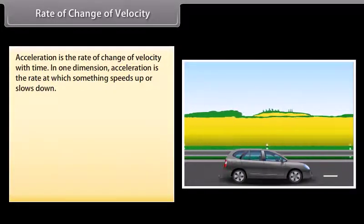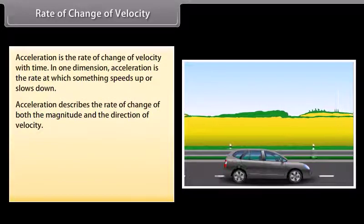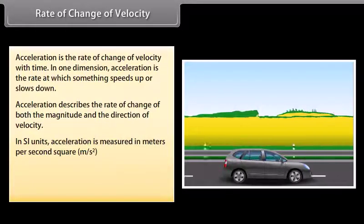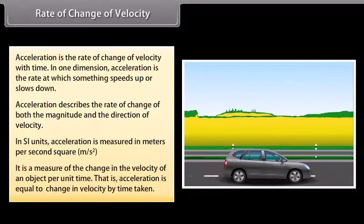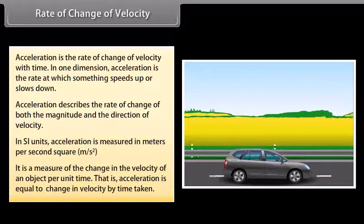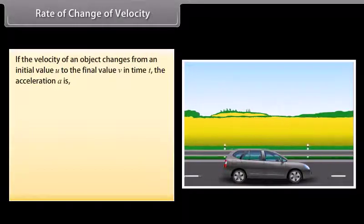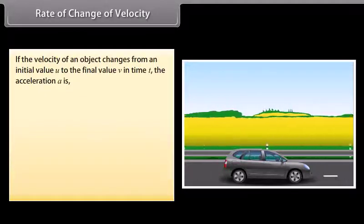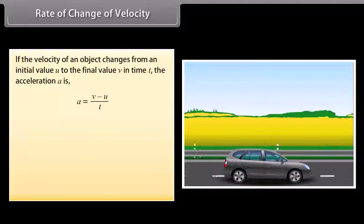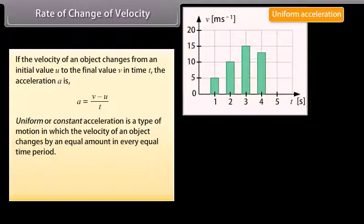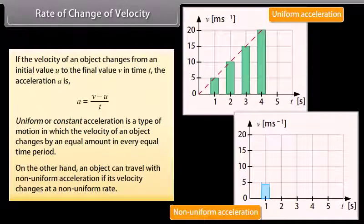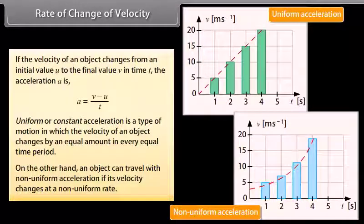Rate of change of velocity — Acceleration. Acceleration is the rate of change of velocity with time. In one dimension, acceleration is the rate at which something speeds up or slows down. Acceleration describes the rate of change of both the magnitude and the direction of velocity. In SI units, acceleration is measured in meters per second squared. Acceleration = change in velocity / time taken. If the velocity of an object changes from initial value U to final value V in time T, then acceleration A = (V − U) / T. Uniform acceleration means the velocity changes by an equal amount in every equal time period. An object can also travel with non-uniform acceleration if its velocity changes at a non-uniform rate.